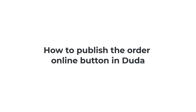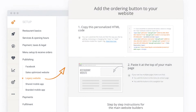How to publish the Order Online button in Duda. Restaurant owners should remember that before going to the Duda editor, they should make sure to go to the admin, then to publishing, then to legacy website, and click on the HTML code link. This way, they'll be taken to the page containing their unique restaurant code, which they can copy.